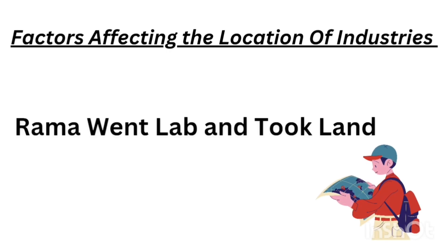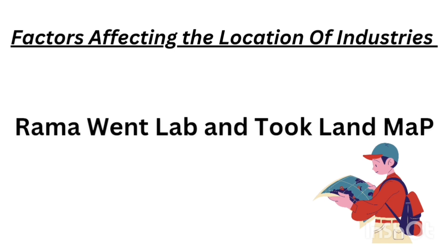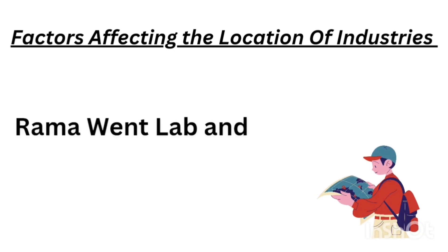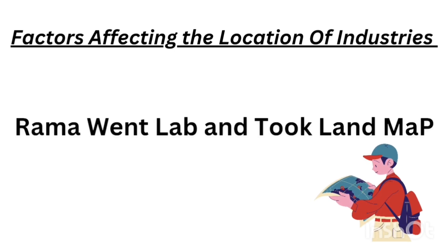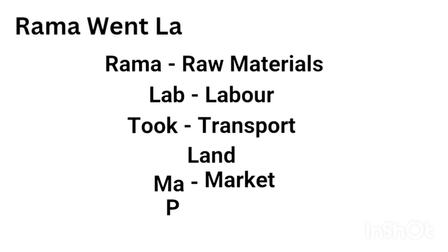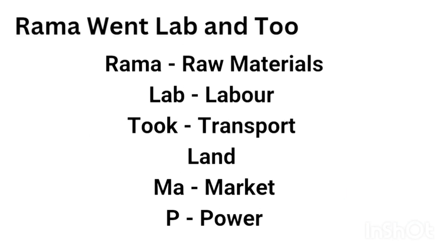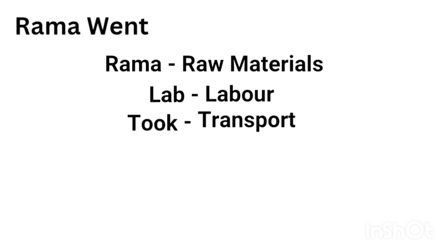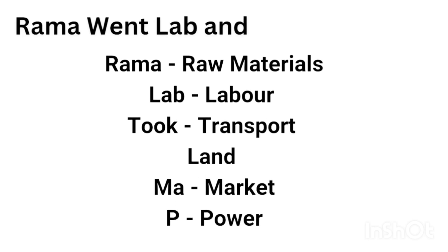The shortcut is: 'Rama went lab and took land map.' Let's see what it means. In the word 'Rama,' R-A refers to 'raw' and M-A refers to 'material' — that is, raw materials. 'Lab' represents labour. 'T' represents transport.